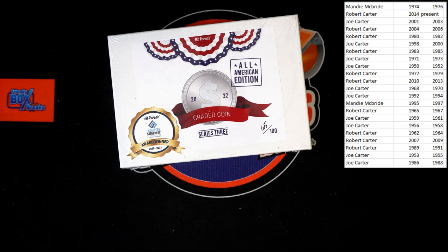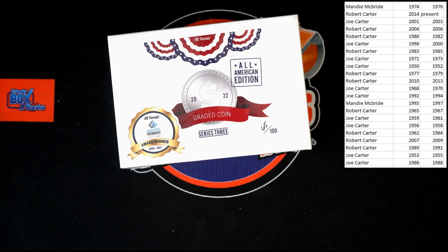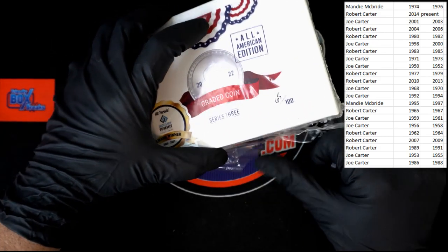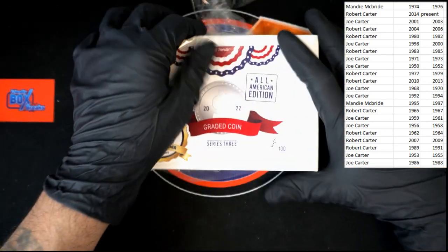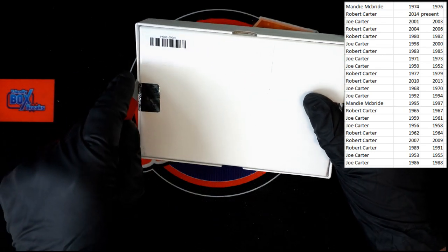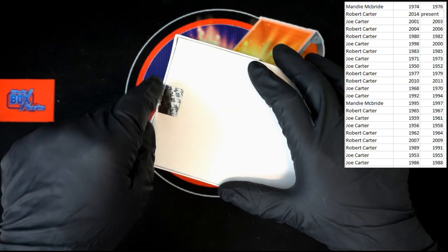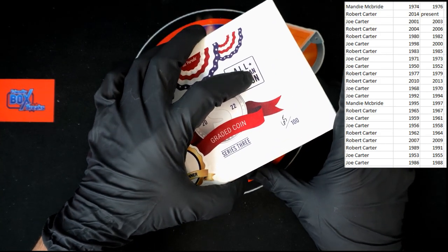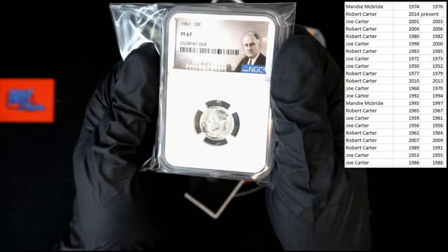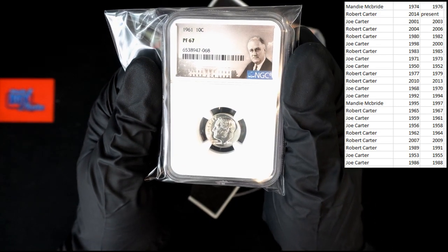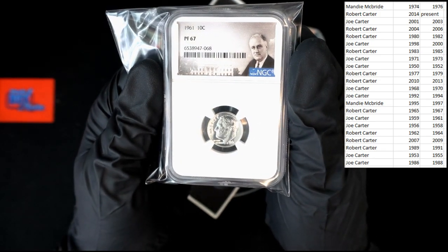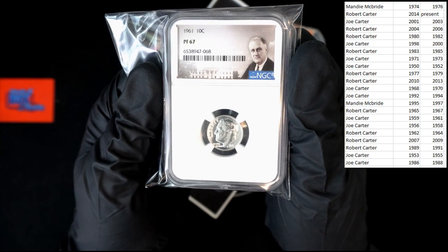Get that keyboard out of the way. Let's check it out. All right, best of luck all. What do we have? We got a dime, 1961. Try to get a good look at it, but there's a lot of glare right there. There we go, 1961, 10 cent piece.